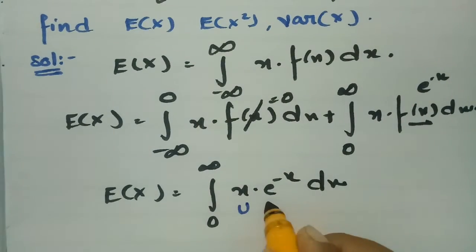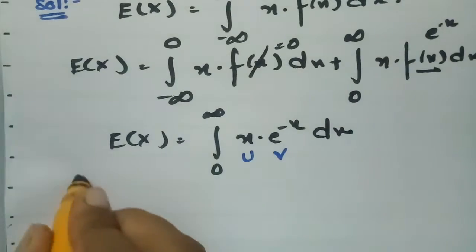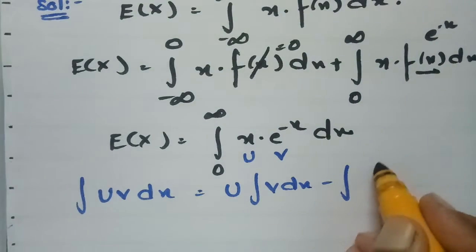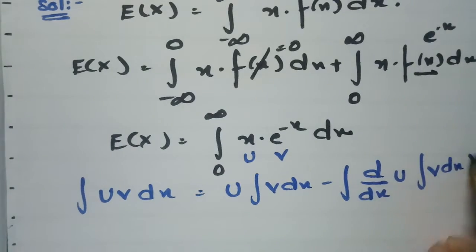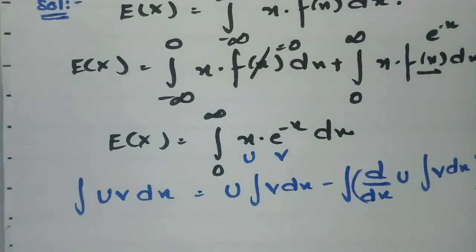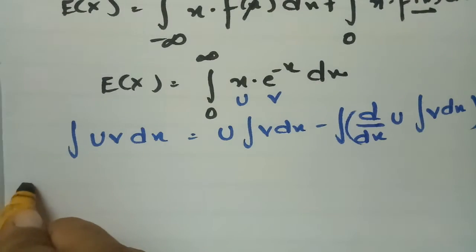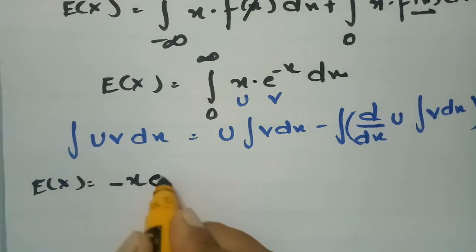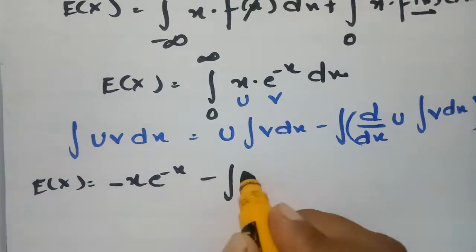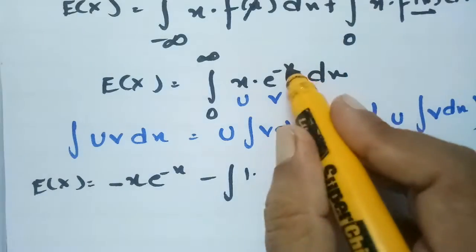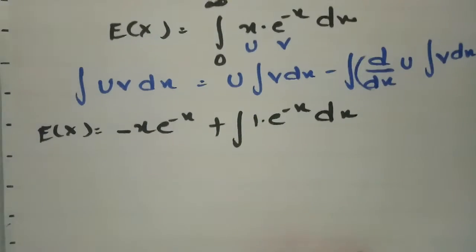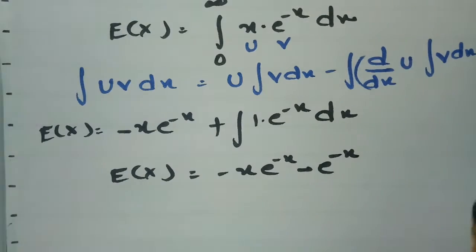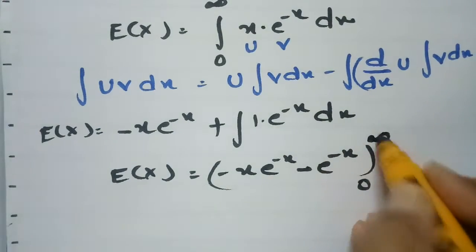This is integration by parts using the UV rule: integral of u·v dx = u times (integral of v) minus integral of (derivative of u times integral of v) dx. Applying this, E(X) = x·(-e^(-x)) minus the integral of 1·(-e^(-x)) dx, which gives minus x·e^(-x) minus e^(-x), evaluated between the limits 0 to infinity.